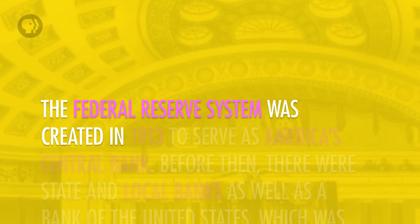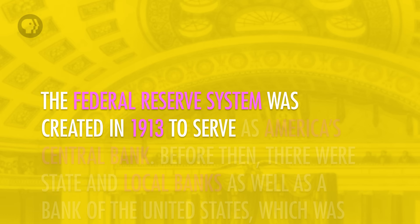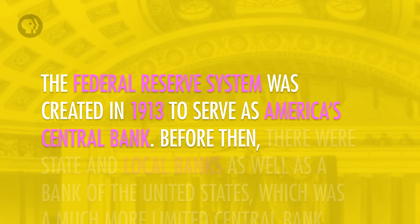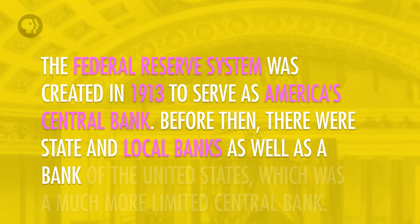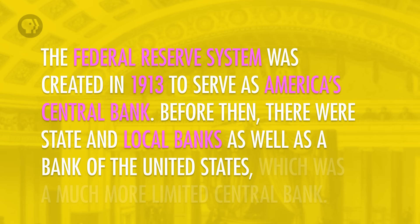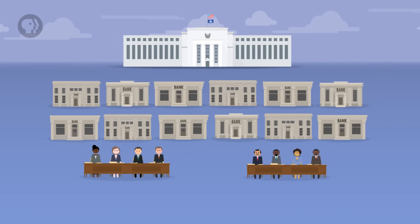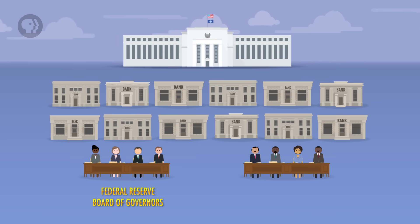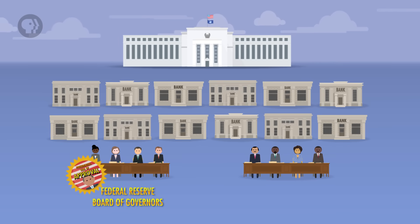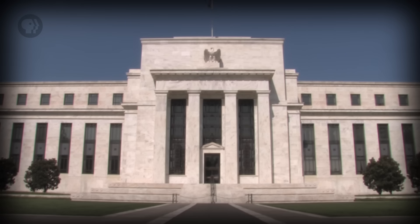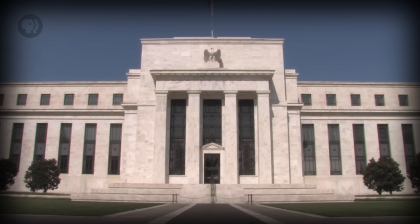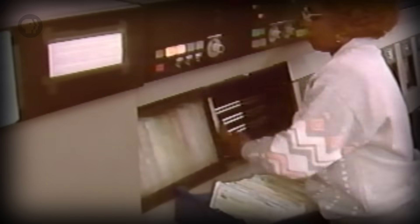The Federal Reserve System was created in 1913 to serve as America's central bank. Before then, there were state and local banks, as well as a Bank of the United States, which was a much more limited central bank. The Fed is made up of twelve regional banks and two boards: the Federal Reserve Board of Governors, who are appointed by the President, and the Federal Open Market Committee, which is partially appointed by the President. The Fed has two primary tasks: to control inflation and to encourage full employment, and it has four basic functions, but one of them is way more important than the others.